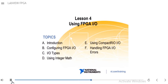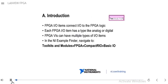As a quick overview, we're going to give you an introduction to FPGA-IO. We're going to talk about configuring FPGA-IO, different I/O types, using integer math, using compact real I/O, and how to handle FPGA-IO errors. FPGA-IO items connect the I/O to the FPGA logic — this is how you get signals into and out of the FPGA.